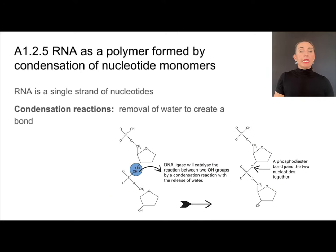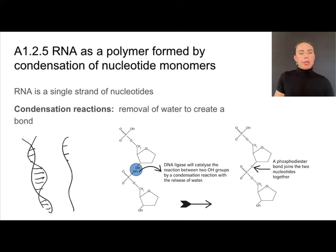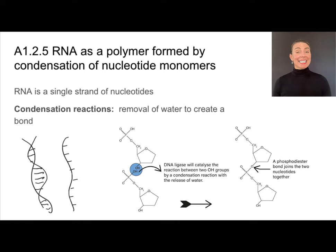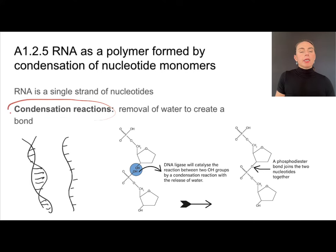DNA is double-stranded, while RNA is only single-stranded, but both are long polymers made of repeating nucleotide units. To make a strand of DNA or RNA, nucleotides must be joined together by forming phosphodiester bonds between the phosphate group of one and the pentose sugar of the other. This joining uses a condensation reaction — the removal of water to create a covalent bond.